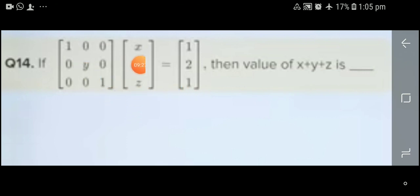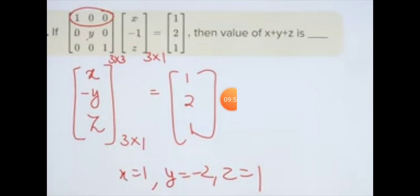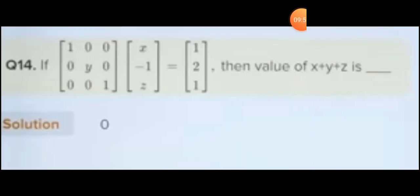For the diagonal matrix problem, multiply the diagonal elements by x, y, z to get x plus y plus z. A diagonal matrix with x, -y, z gives x equals 1, minus y equals 2 so y equals minus 2, and z equals 1. Finding the sum: 1 plus (-2) plus 1 equals 0. That's the final answer.